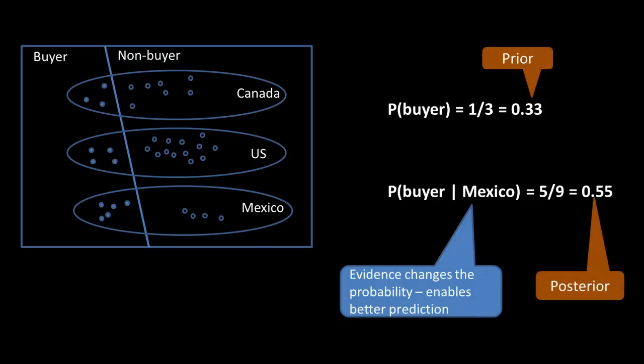And this other probability is the posterior probability or a posteriori probability. Okay, so these are two terms that are generally used in statistics: prior and posteriori.